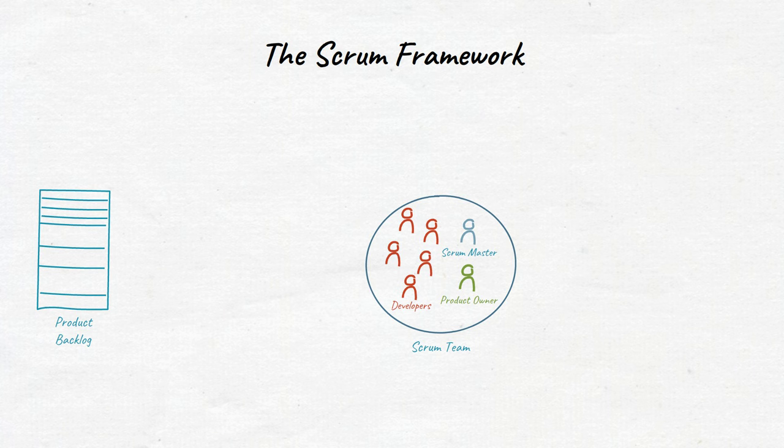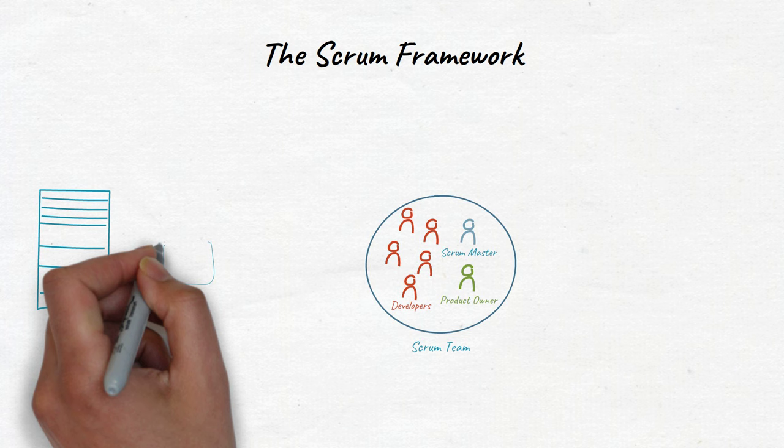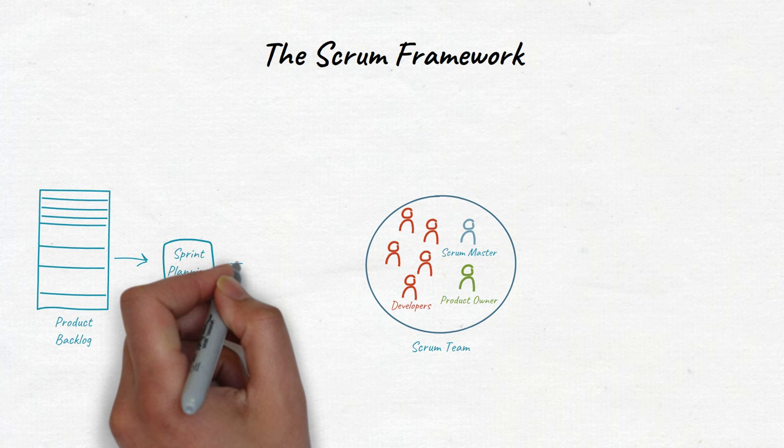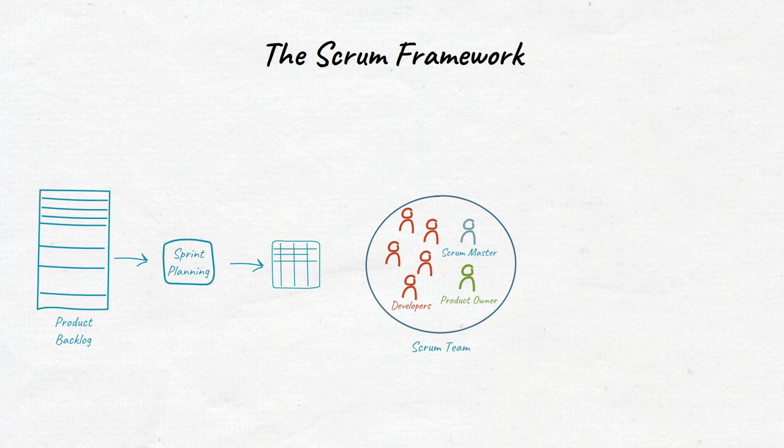The Scrum team meets at the start of every sprint in an event called sprint planning. During sprint planning, the sprint backlog is composed of the sprint goal (why), the set of product backlog items selected for the sprint (what), as well as an actionable plan for delivering the increment (how).